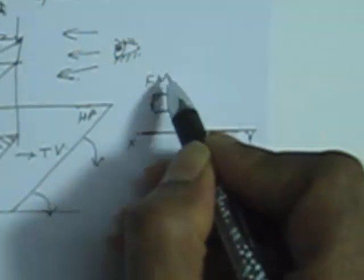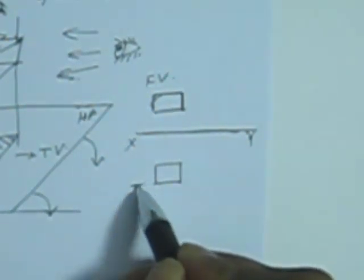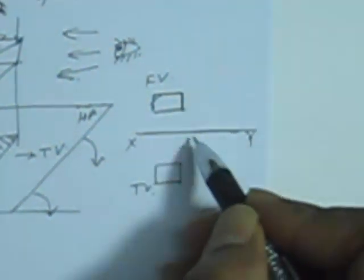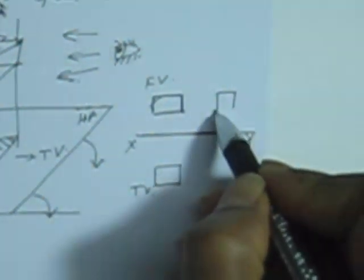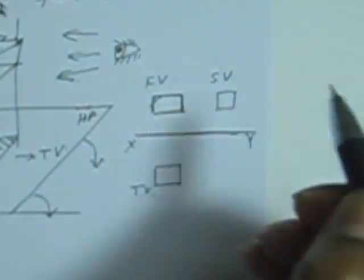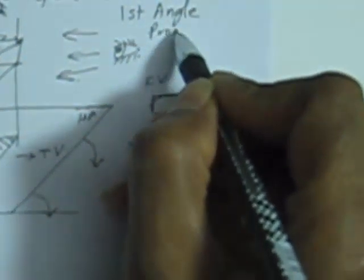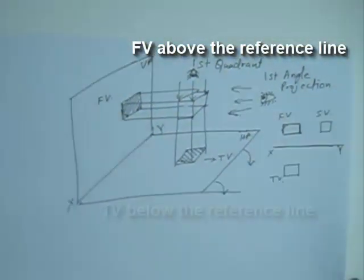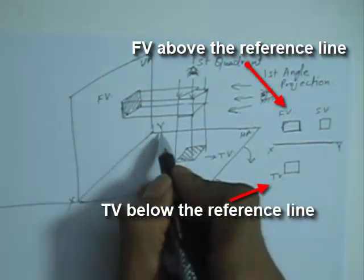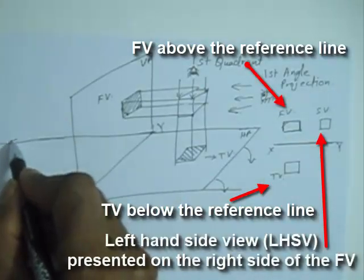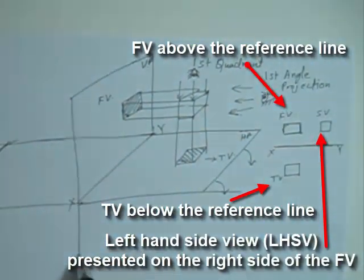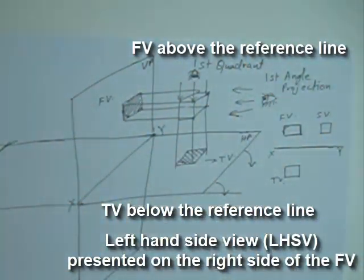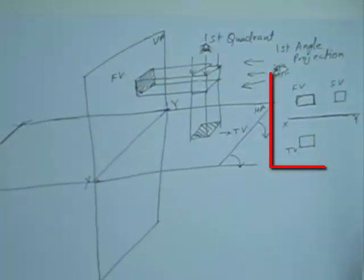First, we draw the reference line and the front view will be above the reference line. The top view will come below the reference line because the top view is formed on the HP and HP is rotated. The left-hand side view will be presented on the right side of the front view. So, this is the convention of the first angle projection system.